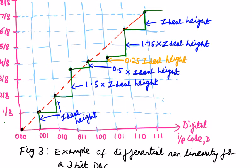In the diagram, for input code 001, it intersects at 1/8, which is the ideal height. Similarly, 010 intersects at 2/8 — that dot is the ideal height. I have put dots and drawn the reference line in red. For 011, the dot should intersect at 3/8, but it is deviated — the height is increased to 1.5 times the ideal height.